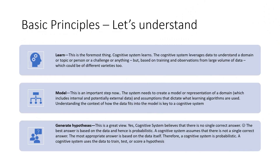The basic principles of cognitive computing are to be understood. Three things should come into the picture: learn, model, and generate hypothesis. Learning is the foremost thing — a cognitive system learns continuously and consistently. The system leverages data to understand a domain, a topic, a person, or a challenge. Based on the training and observations from large volumes of data you provide, it keeps evolving and learning. The learning happens from the feed you give — it can be any amount of data.